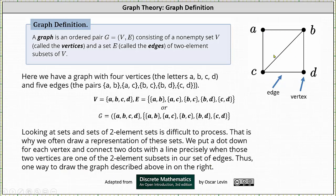Again, we have the vertices A, B, C, and D, and we have the edges {A, B}, {A, C}, {B, C}, {B, D}, and {C, D}.